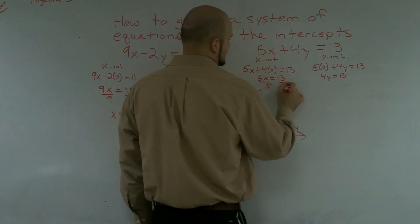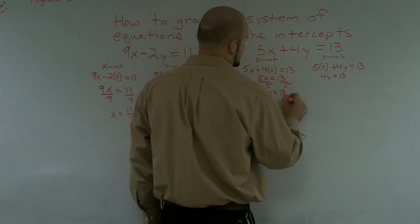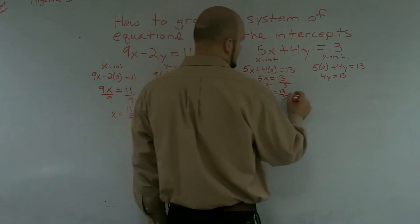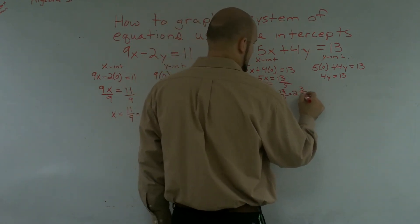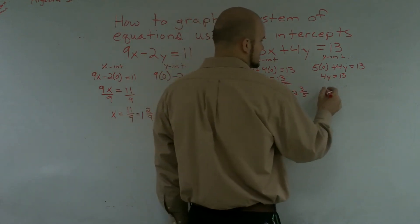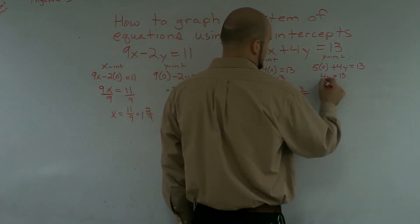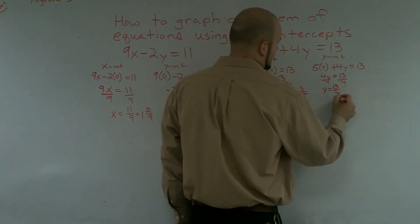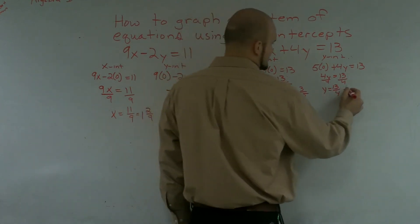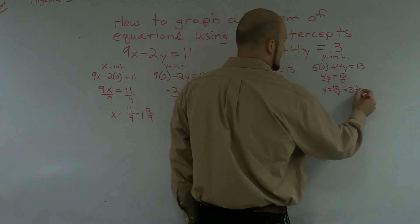Divide by 5, divide by 5, x equals 13 over 5, which reduced to a mixed number would be 2 and 3 fifths. Over here, divide by 4, divide by 4, y equals 13 over 4, which also equals 3 and 1 fourth.